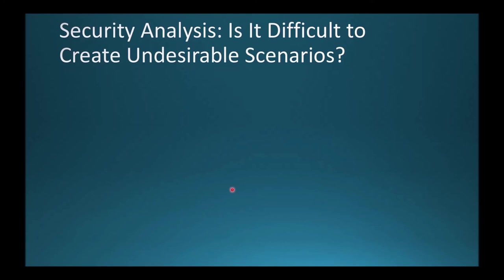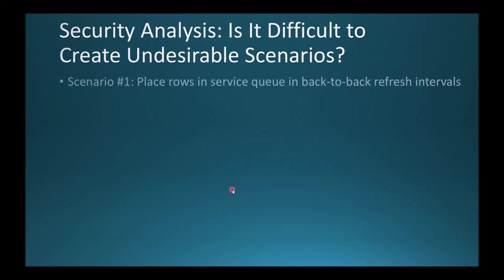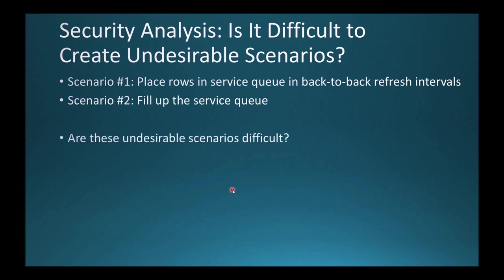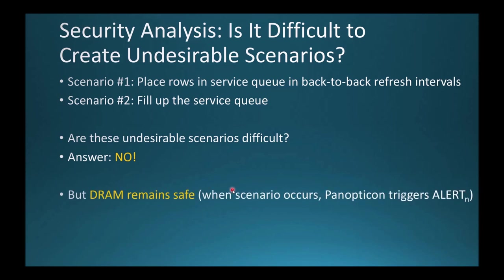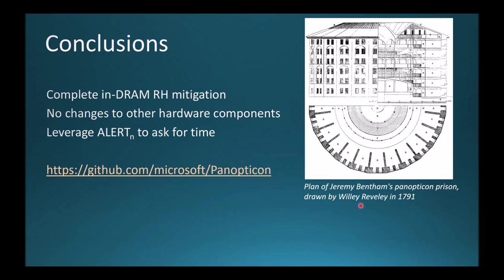We also performed a security analysis of Panopticon. We wanted to understand how difficult it is to create undesirable scenarios, such as placing rows in the service queue during several consecutive back-to-back refresh intervals and filling up the service queue. The answer is that attackers can create both of these scenarios with relative ease. However, as long as Panopticon can put things on hold and ask the memory controller for time, the DRAM remains safe. Panopticon is a complete in-DRAM Rowhammer mitigation that is both inexpensive and, for DDR4, requires no changes to any hardware components other than DRAM. For more information, please read our paper and see our simulator code on GitHub. Thank you.